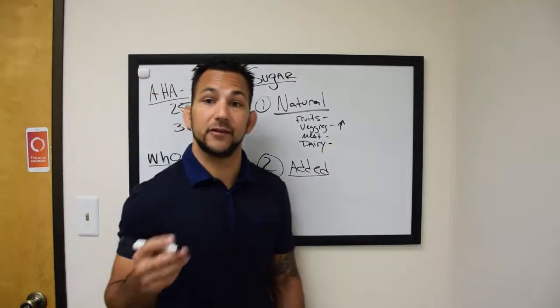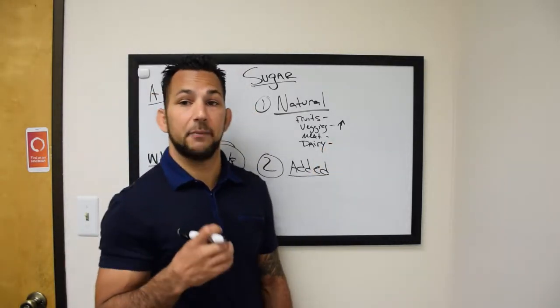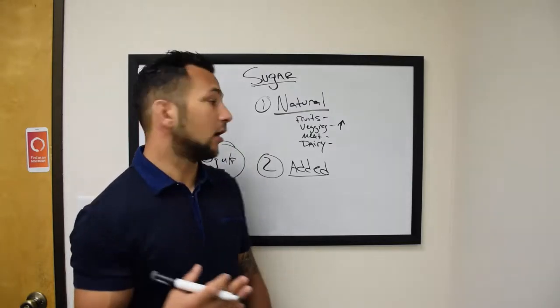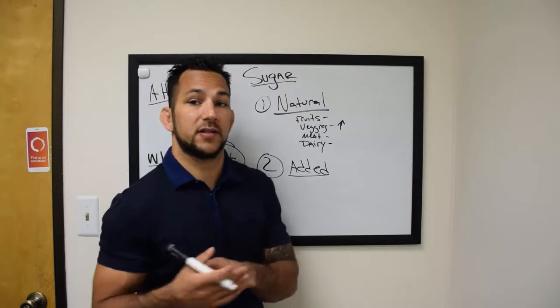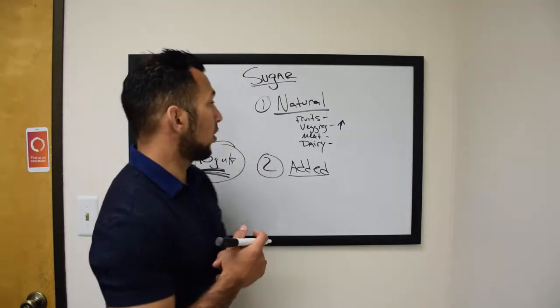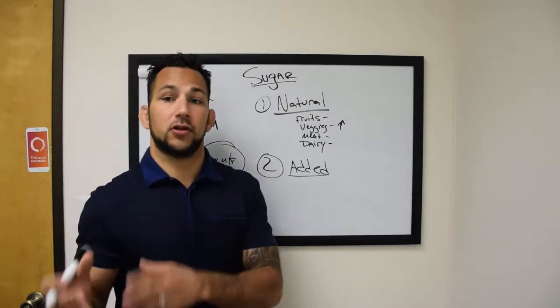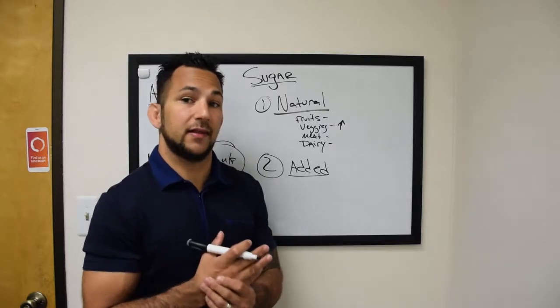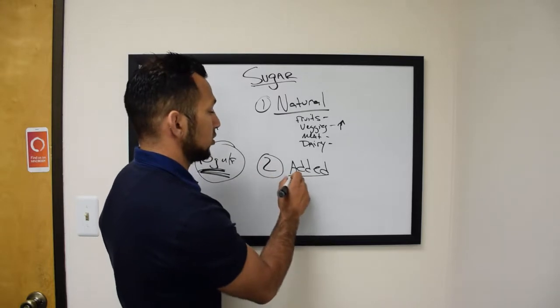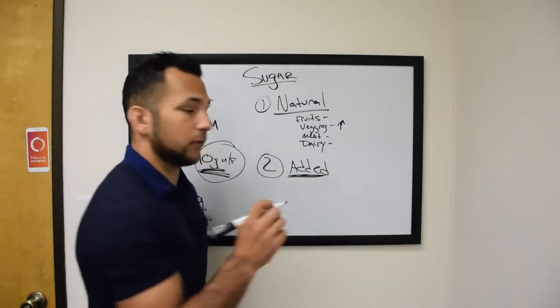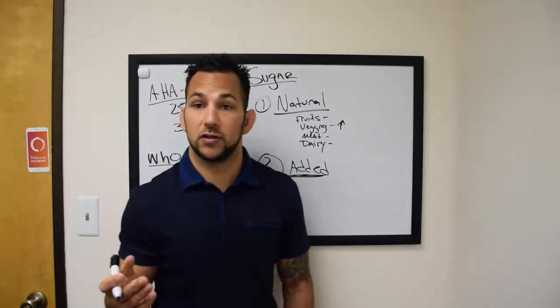And dairy. Dairy is naturally occurring. We have lactose, which is a type of milk sugar. Now, I'm not a huge fan of dairy, but let's just say you are somebody who eats dairy. There are naturally occurring sugars within that. What you need to do is recognize the added sugars. The added sugars are important.